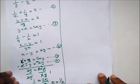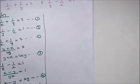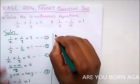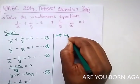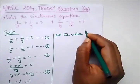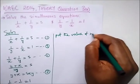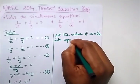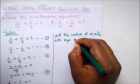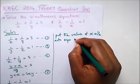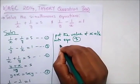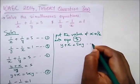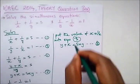Since we have x equal to 1 over 2, we now substitute this value — since it's a theory question we have to state our workings. I'll substitute x equal to 1 over 2 into equation three: y plus x equal to 5xy.